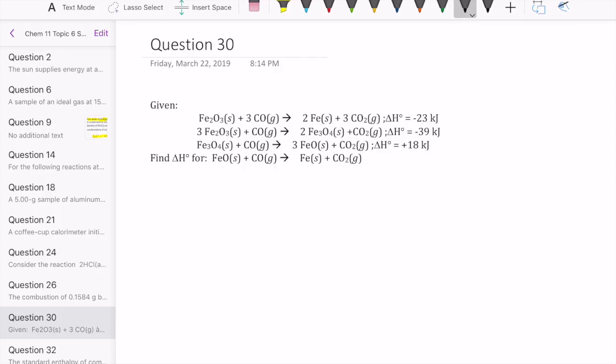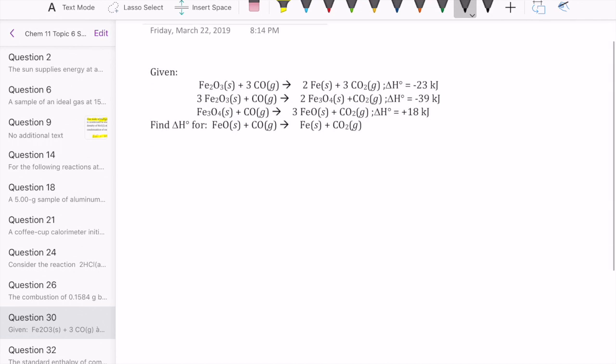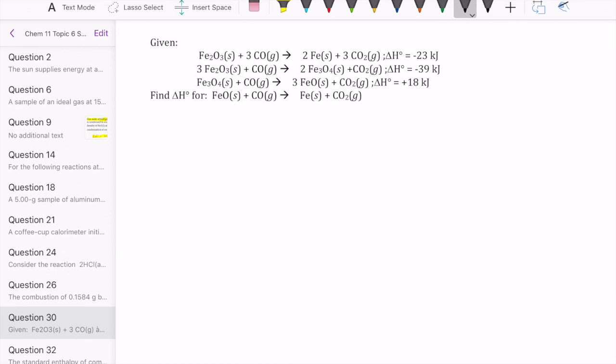Okay, let's take a look at question 30 in topic set 6. This is a Hess's Law question. As you can see here, you have three reactions that are given to you with enthalpies, and then you're also being asked to find the delta H for this reaction right here, which is our target.